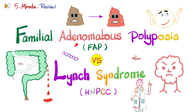Today we'll talk about familial adenomatous polyposis versus Lynch syndrome. Both of them can affect your colon. Familial adenomatous polyposis has many polyps — it's a condition of polyps. These are glands, adeno, adenomatous, and it's familial — it's inherited. Versus Lynch syndrome, also known as hereditary non-polyposis colorectal cancer — also inherited, but no polyps.